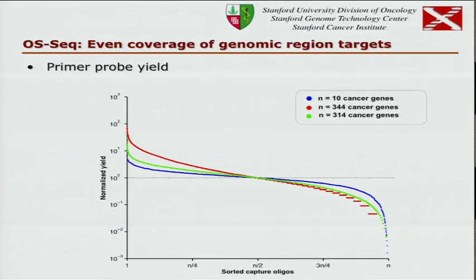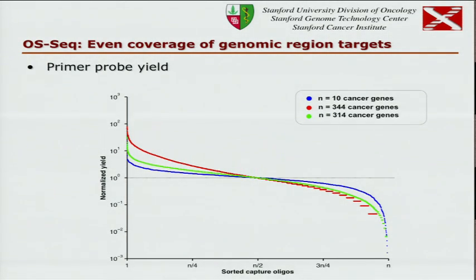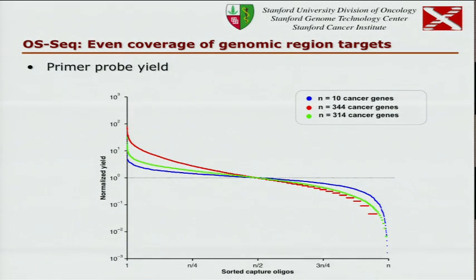For uniformity of capture, the blue line from our first experiments using column-synthesized oligos shows the highest quality — the curve is very flat. We started doing microarray versions of the capture probes; initially they were not as even, but now we've improved it. In the blue we had 400-500 capture probes, but in the green, because we synthesized them on microarray, we now have 20,000 of them, almost as good as column-synthesized and much cheaper.